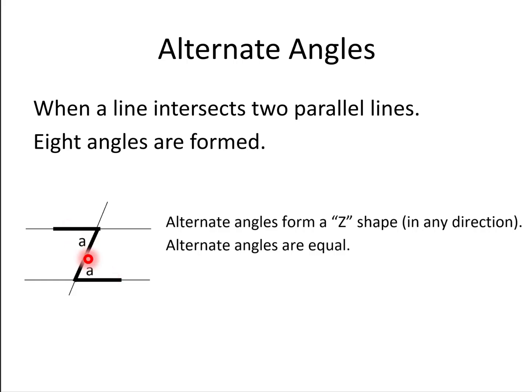So these two angles here, marked both A, are always equal. And opposite angles are equal as well, so I can already work out a lot of the angles. Because these ones are going to be 180 minus A, which brings us to corresponding angles.